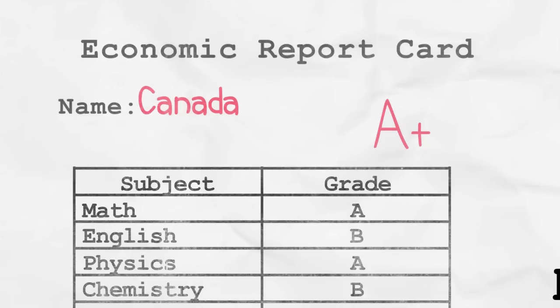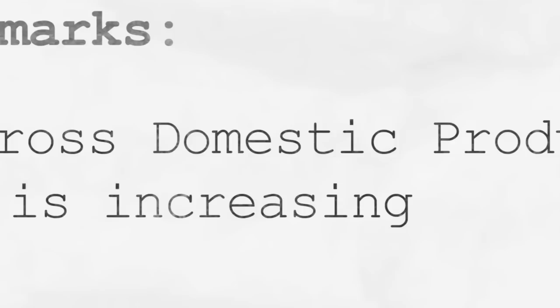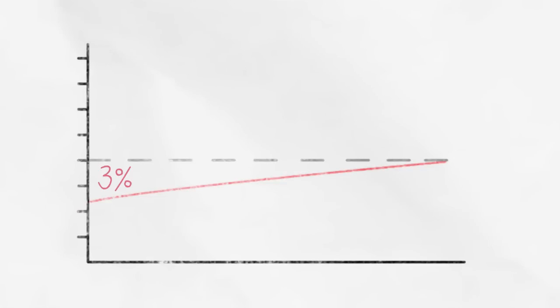Gross Domestic Product, GDP for short, can be thought of as an overall grade on the economic report card of a country or region. It's one way to measure the size and growth of the economy. For example, if the year-to-year GDP is up 3%, this means that the economy has grown by 3% over the last year.